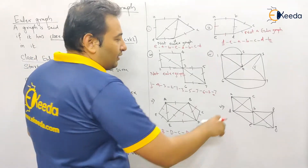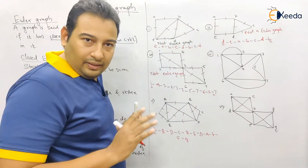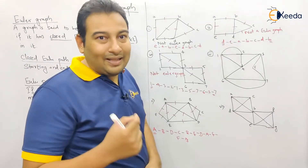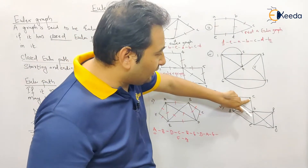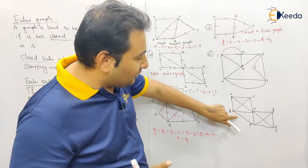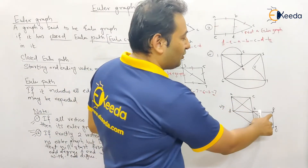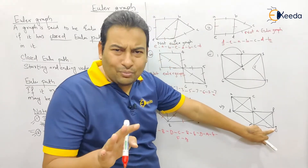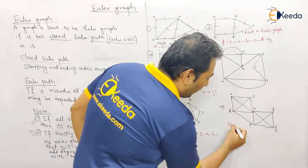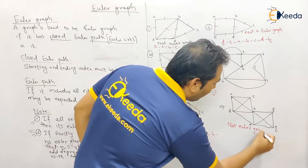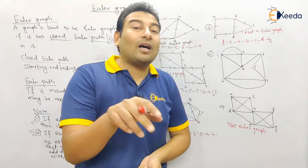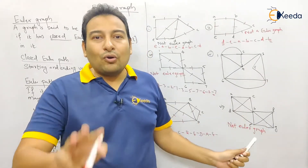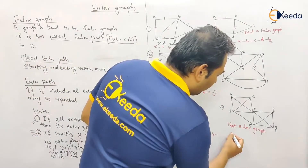Next example: one vertex has degree 3 — not an Euler graph. Checking for an Euler path: this vertex is odd, this vertex is odd, this vertex is even (degree 4), this is even (degree 6), and this is also odd. Three vertices have odd degree. Since there are more than two odd-degree vertices — not an Euler graph and no Euler path either.